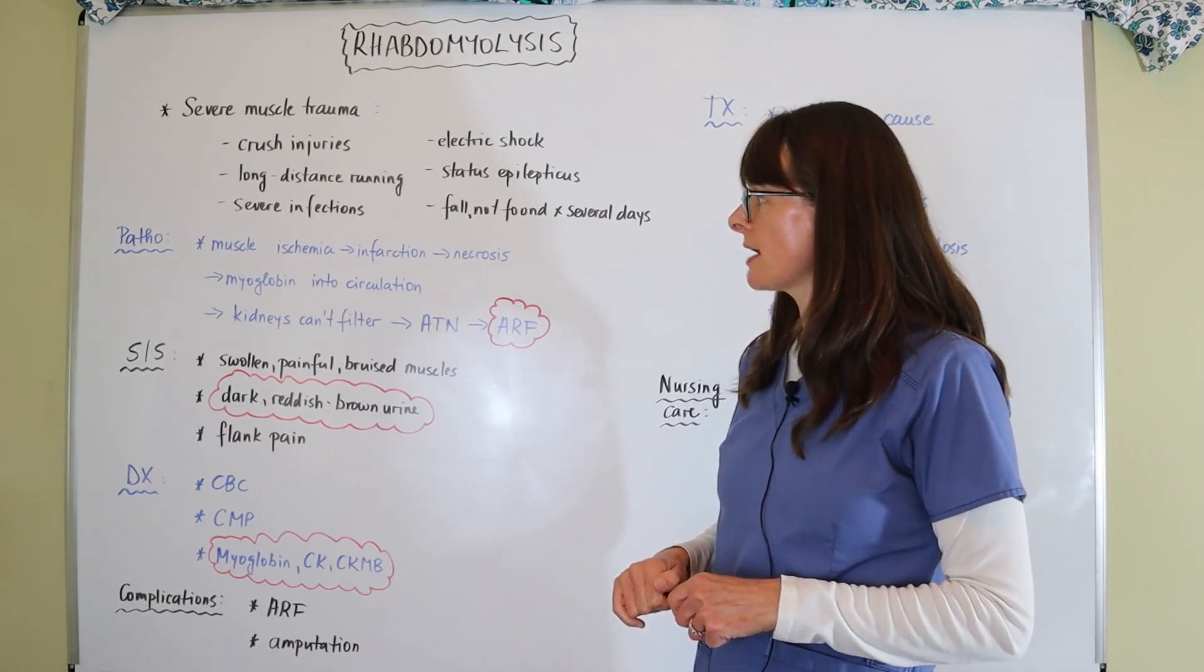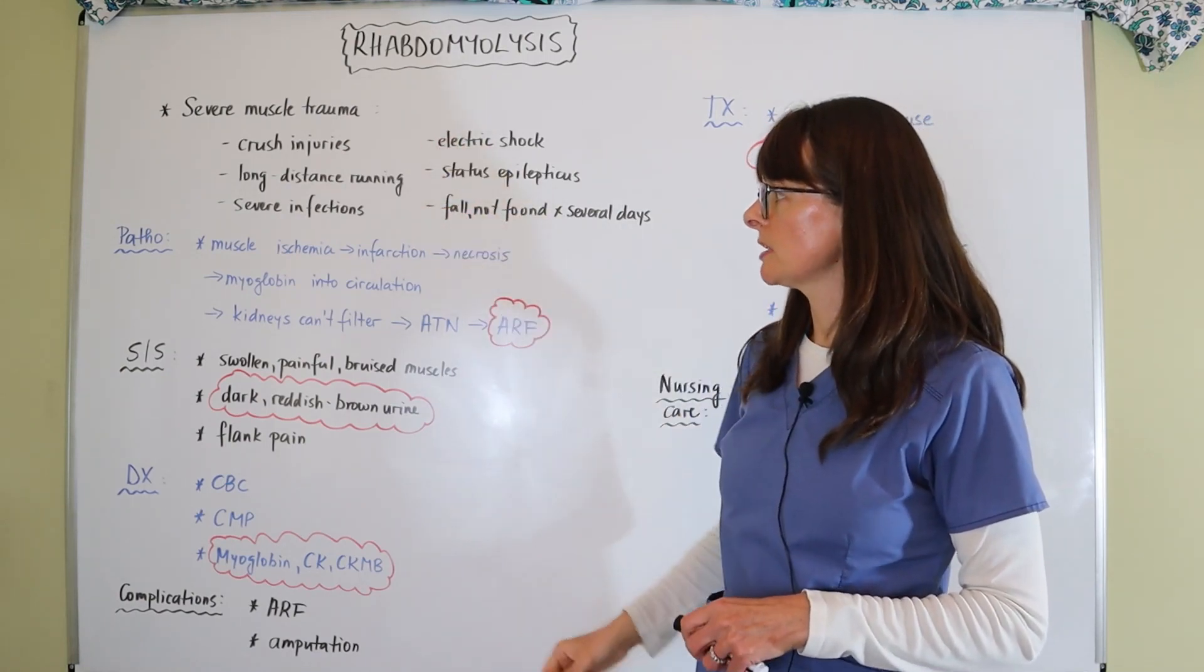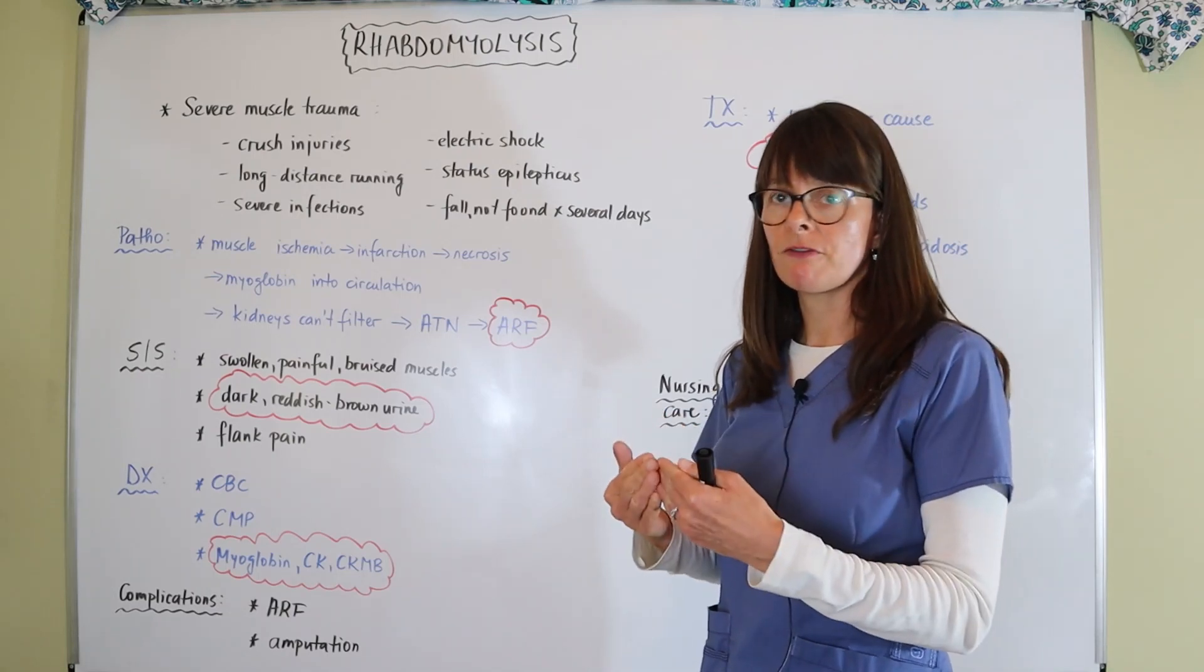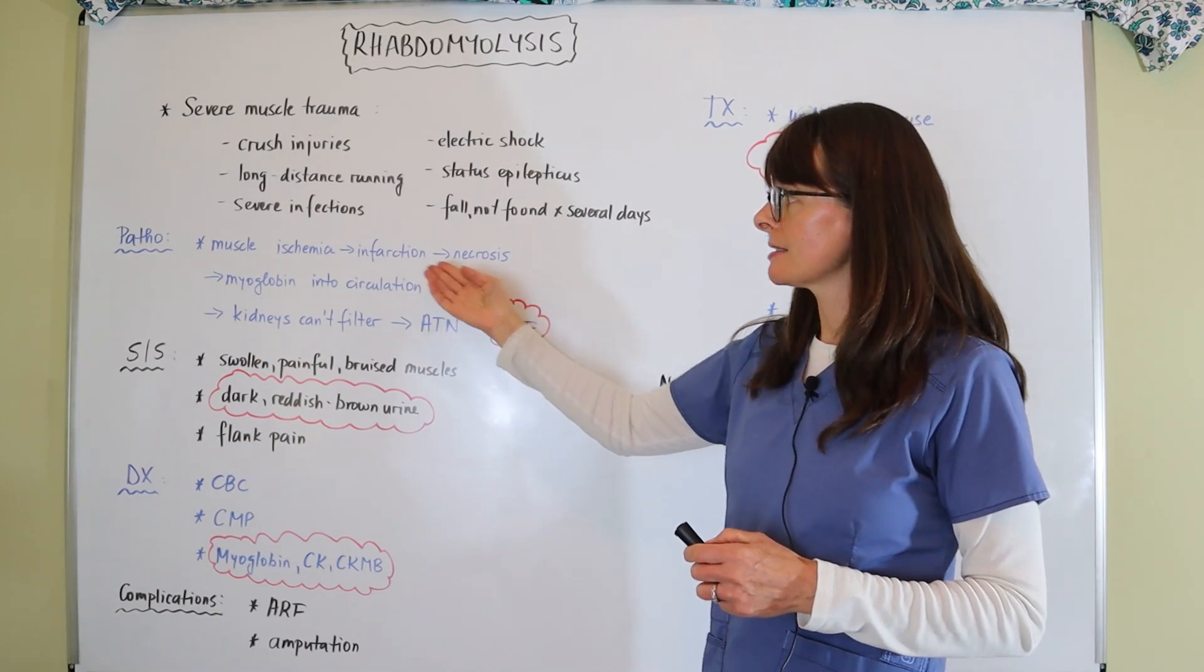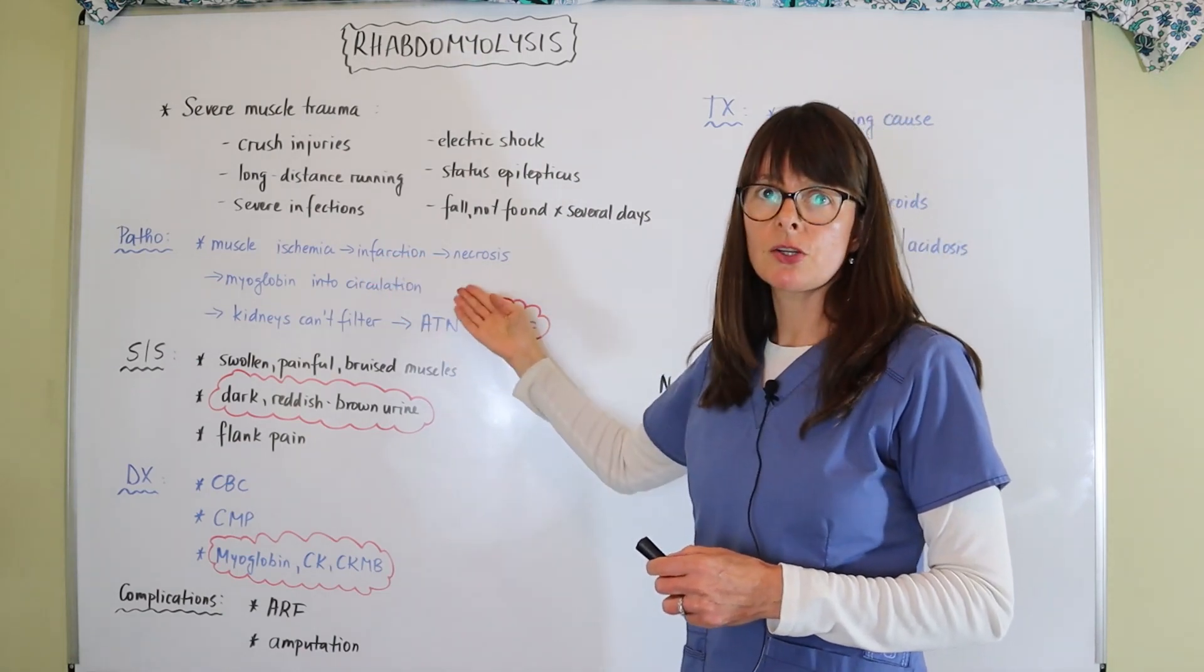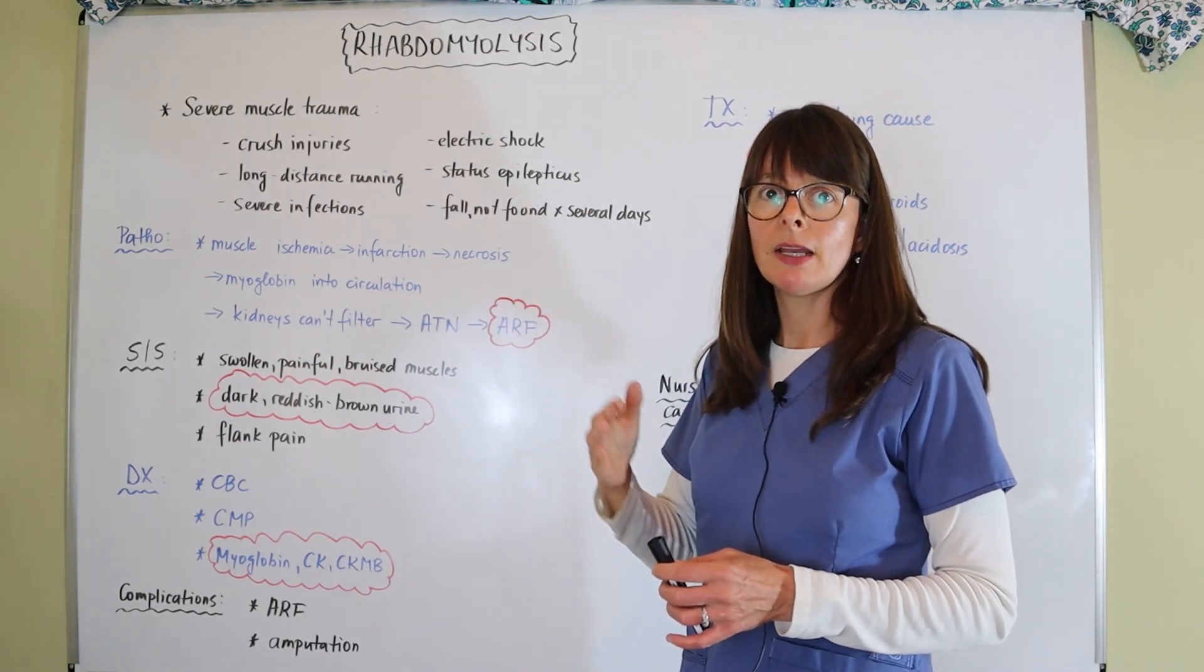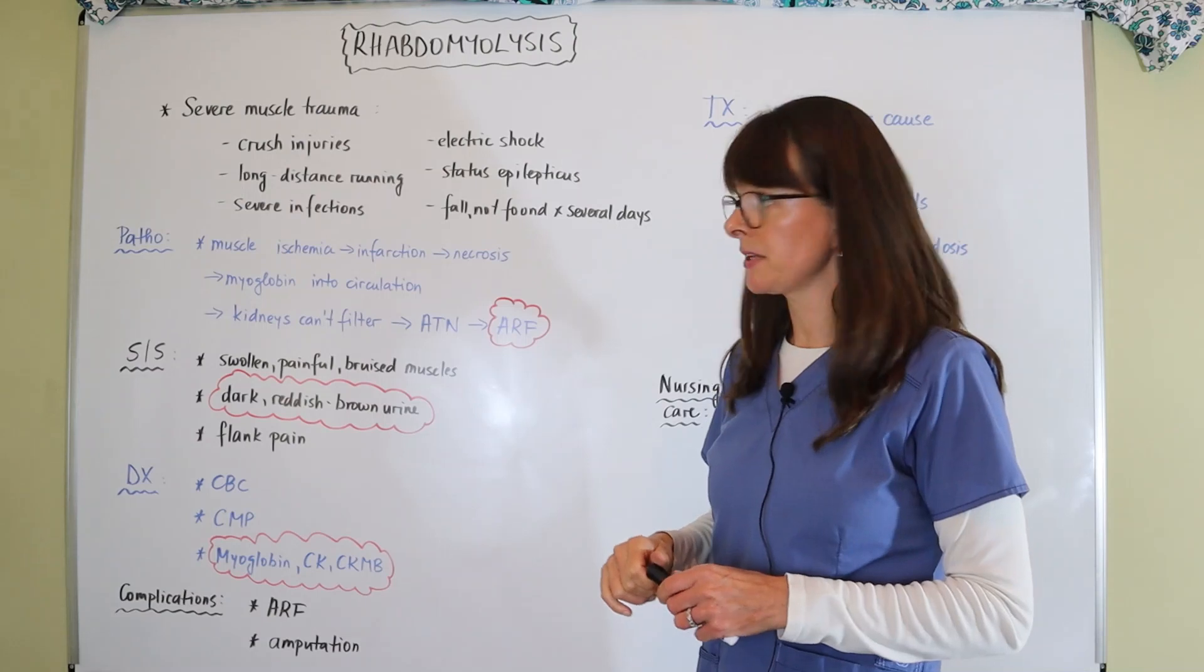For pathophysiology, when there is severe muscle trauma from any of these causes, the muscle gets ischemic, it can lead to infarction, and then eventually it'll become necrotic. This is really the same physiology that occurs in myocardial infarction, except in MI it pertains to cardiac muscle. Here, we're talking about skeletal muscles.